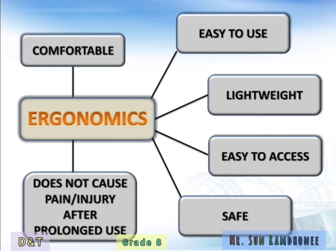We can apply these elements to any product. For example, a water bottle is comfortable to grab. It is easy to use since you do not have to put much effort to open the cap. It is lightweight, therefore you can carry it easily. It is easy to access since it fits within your grip. It is safe to use because there are no sharp or pointed edges. It also does not cause pain or injury with prolonged use.